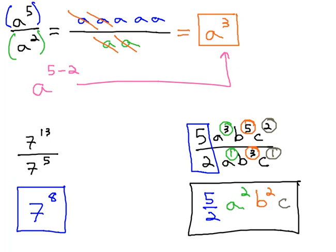This is the quotient rule of exponents. If we've got the same base being divided, we simply have to subtract the exponents.